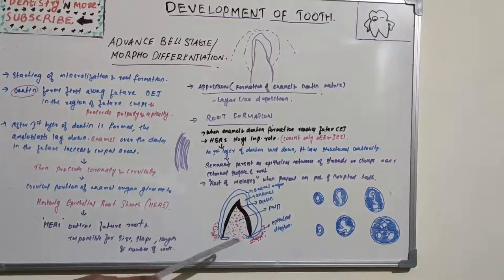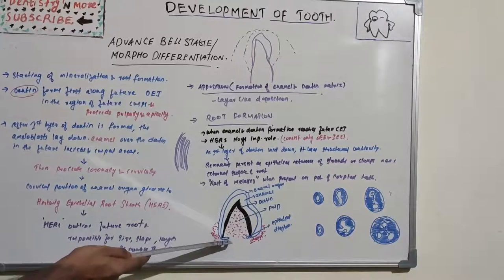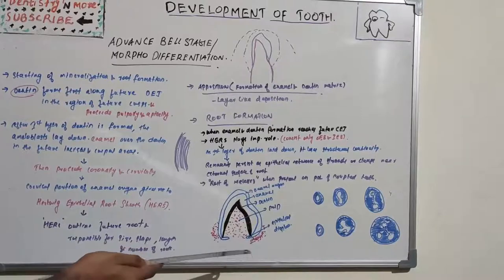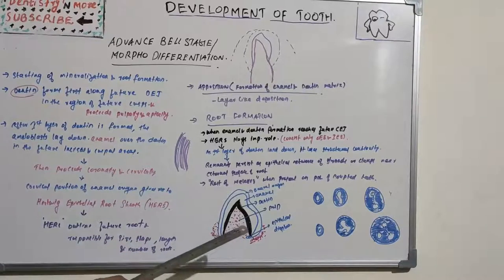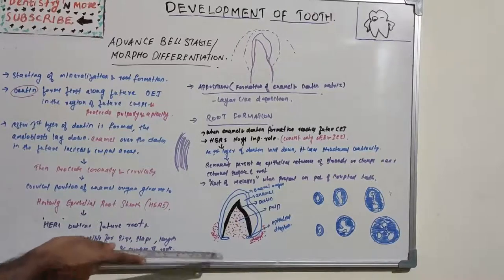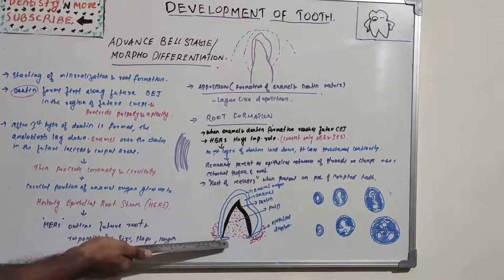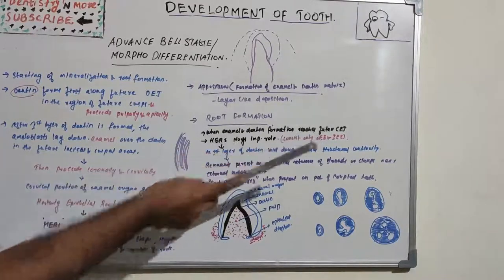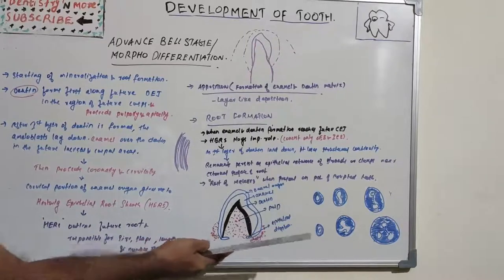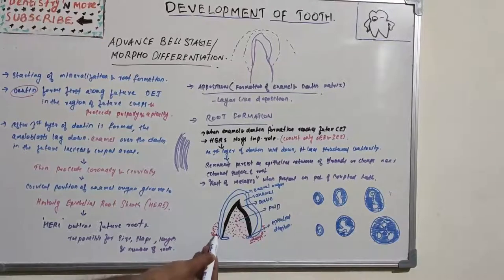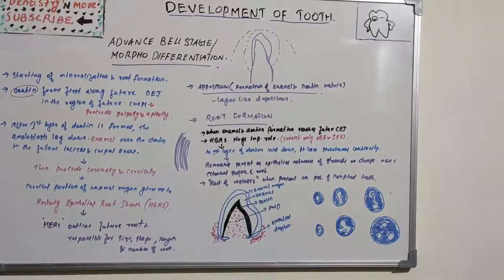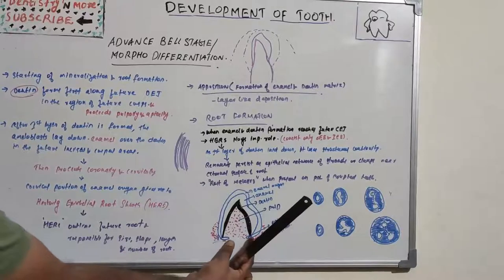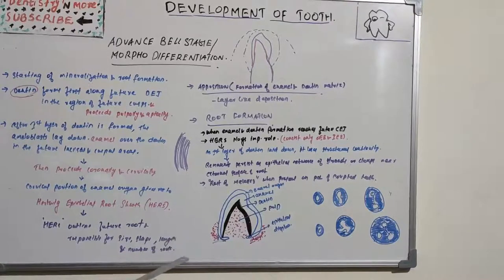Prior to the beginning of root formation, the root sheath forms the epithelial diaphragm. Hertwig's Epithelial Root Sheath forms this diaphragm where the outer and inner enamel epithelium bend horizontally at the future cemento-enamel junction, creating a narrowing of the wide cervical opening.